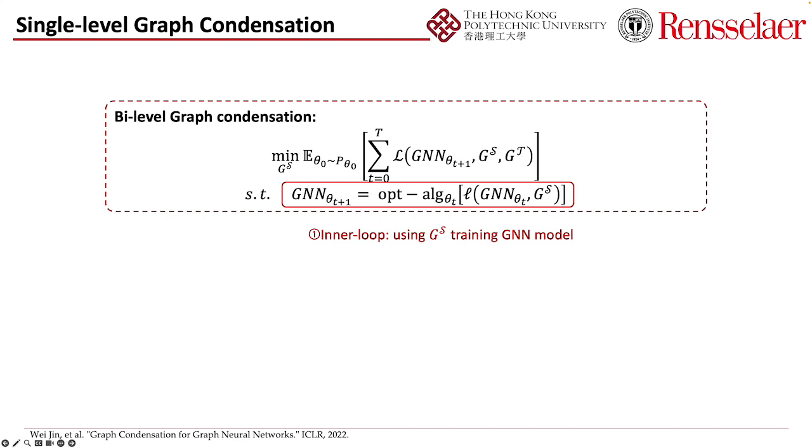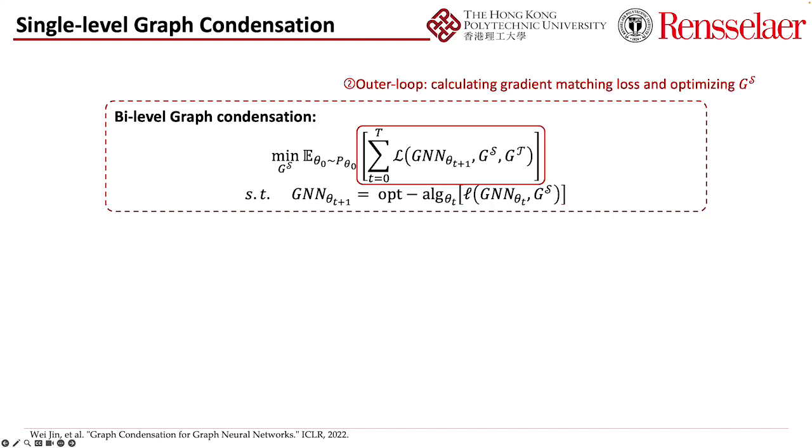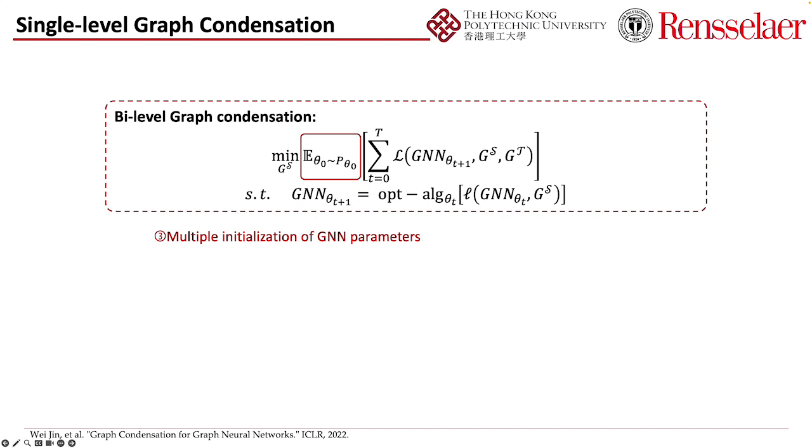This is the objective function of the bi-level optimized graph condensation method, which actually involves three loops. The first loop is the inner loop for training the GNN model using synthetic data, and the outer loop computes the gradient matching loss and optimizes the synthetic data. What's more, there are multiple model initializations making a three-loop optimization problem, which can be time-consuming.